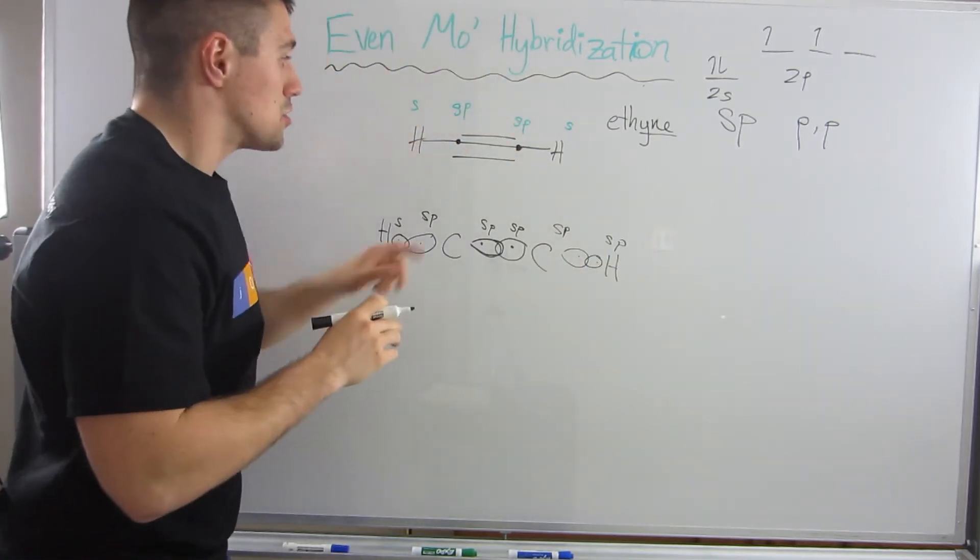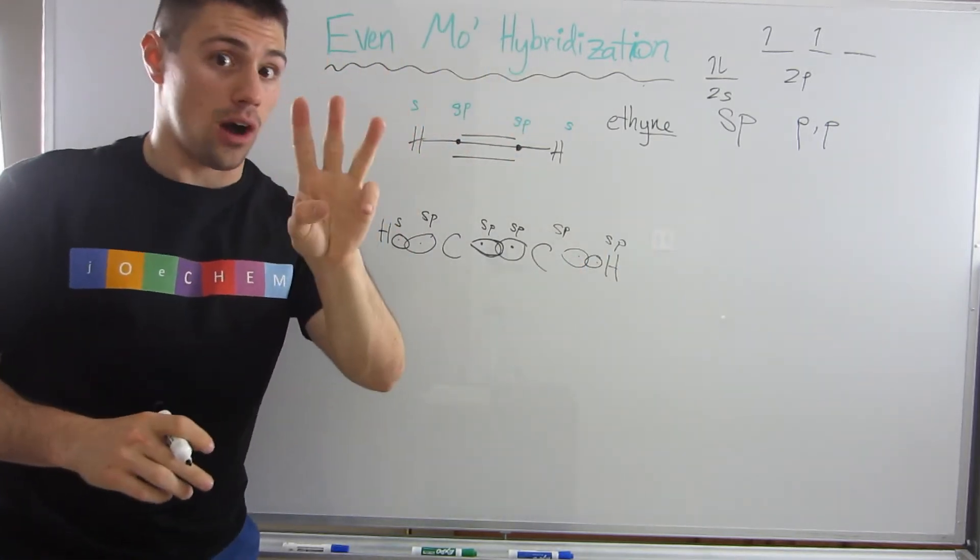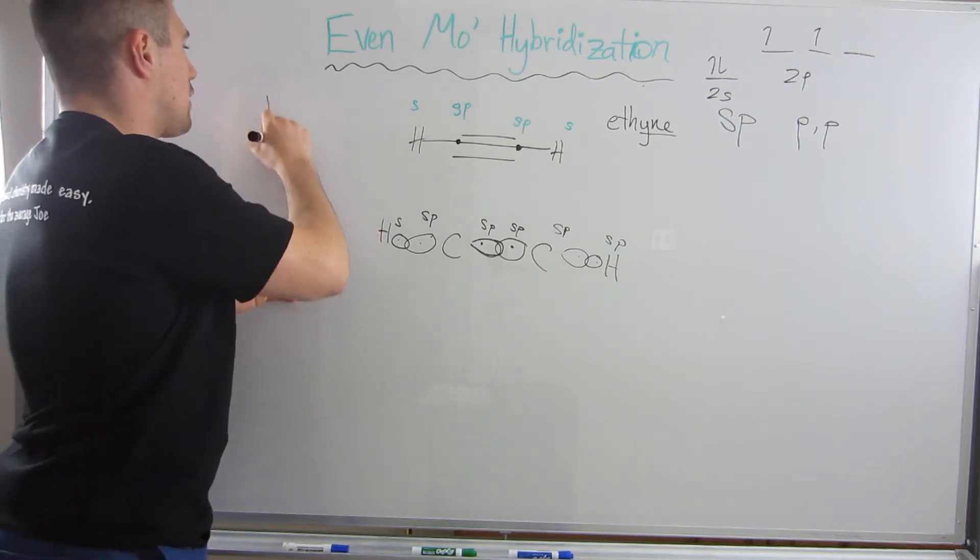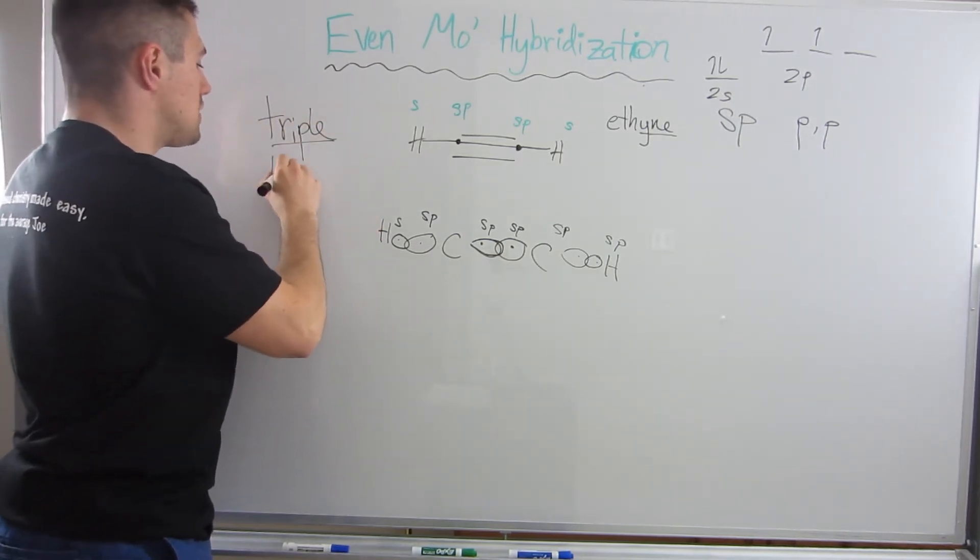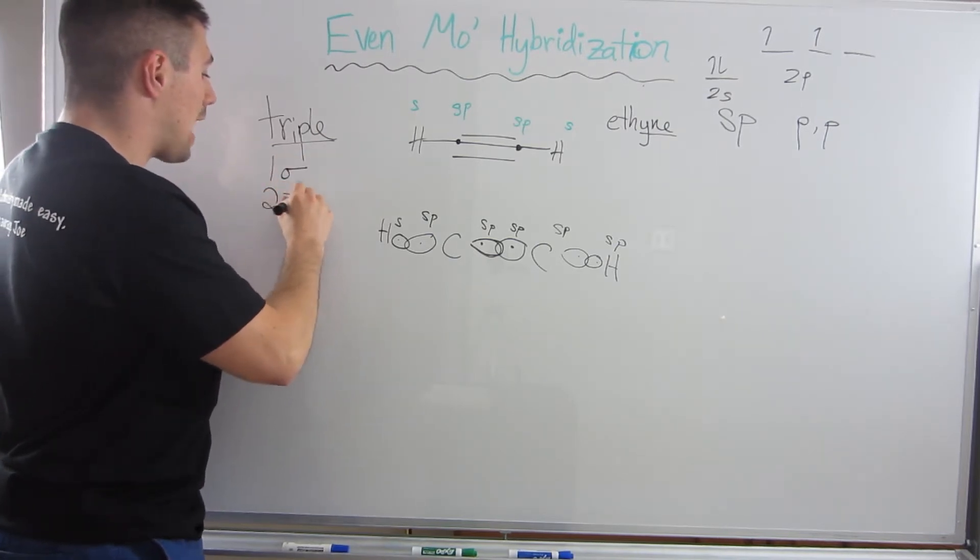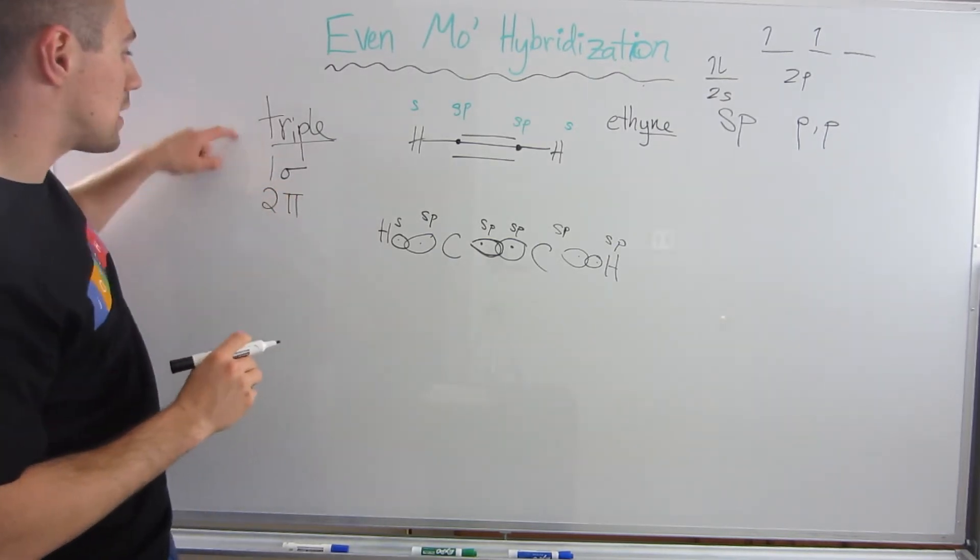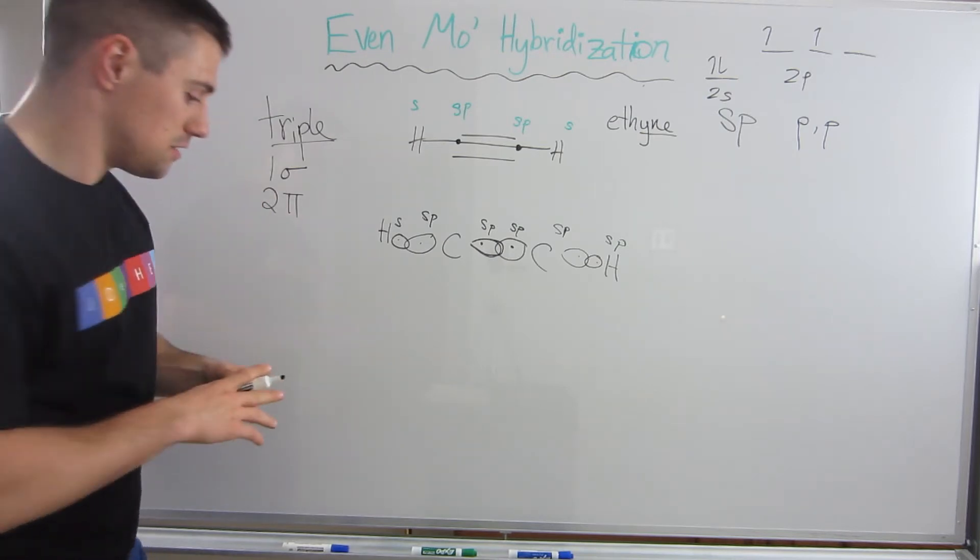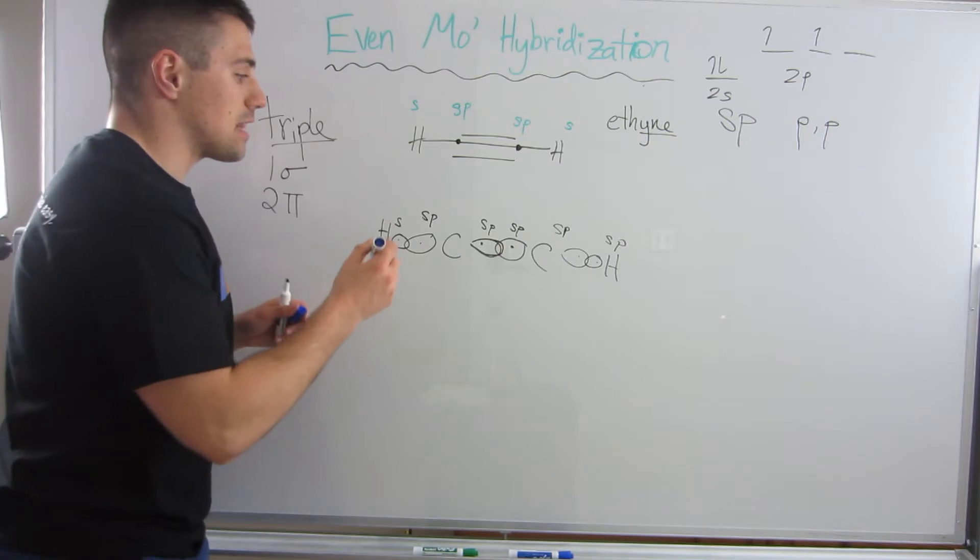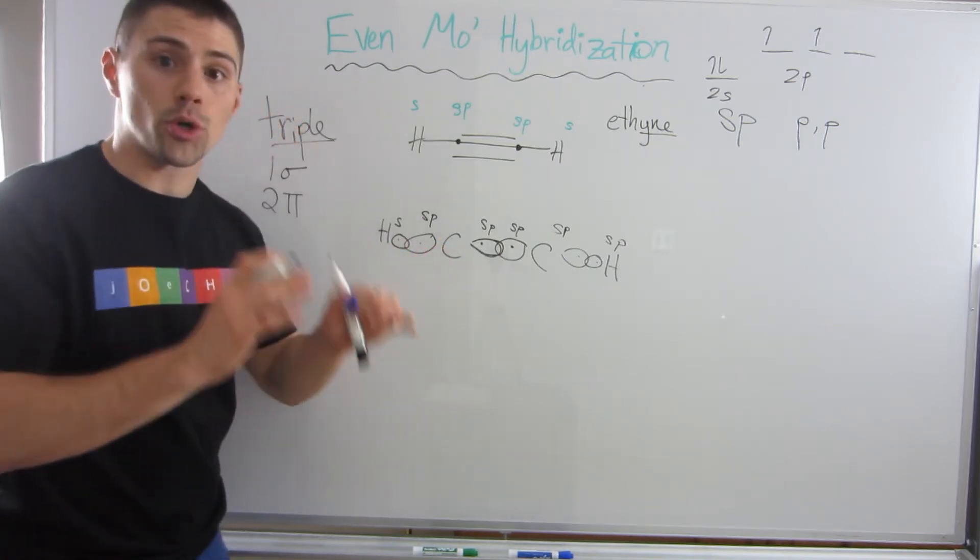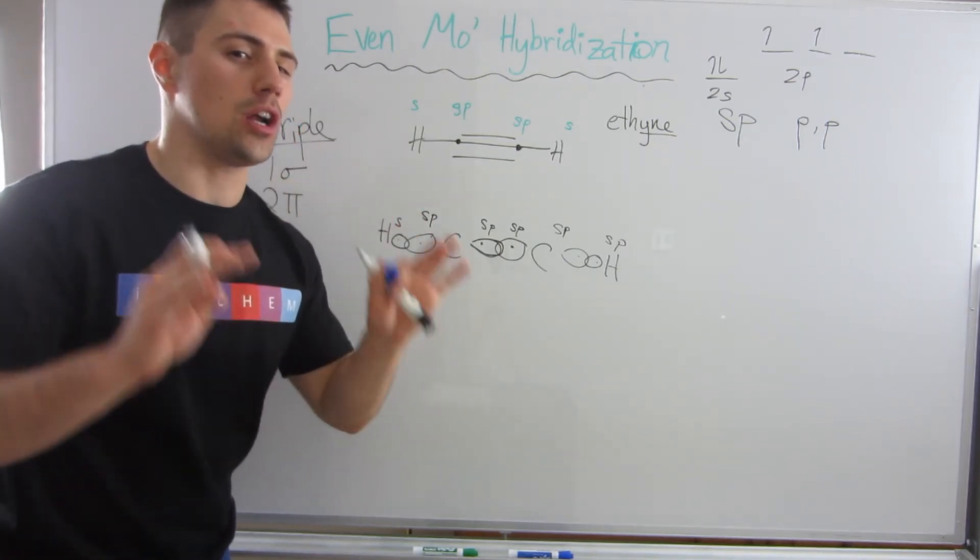Now, in this triple bond there are three bonds. You always have a sigma, but there's one sigma and now we have two pi bonds—that's how we get the triple bond. The other thing I didn't tell you about pi bonds is that the p orbitals need to be perpendicular to every other bond you draw.